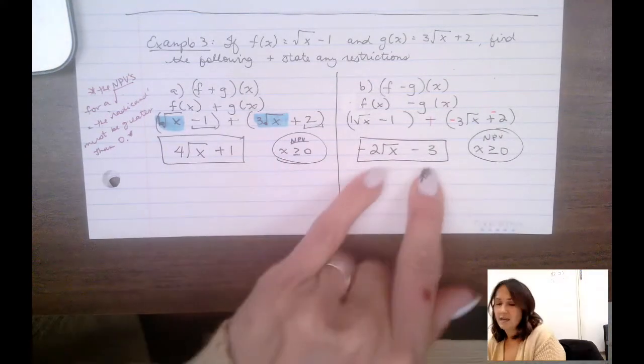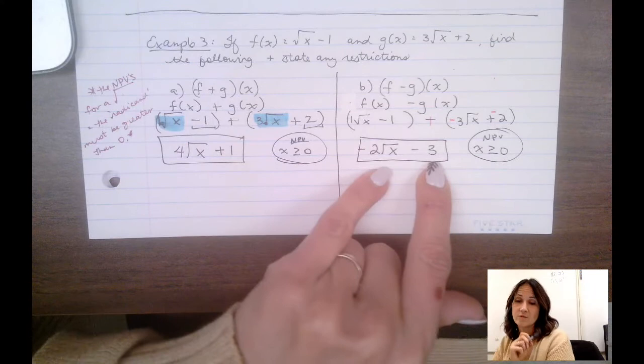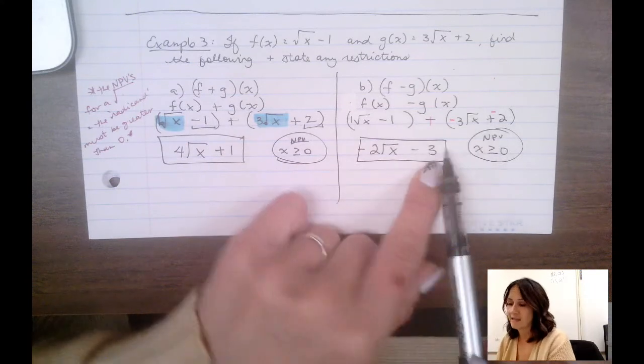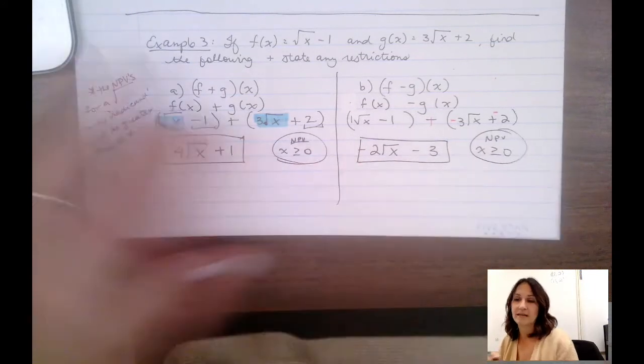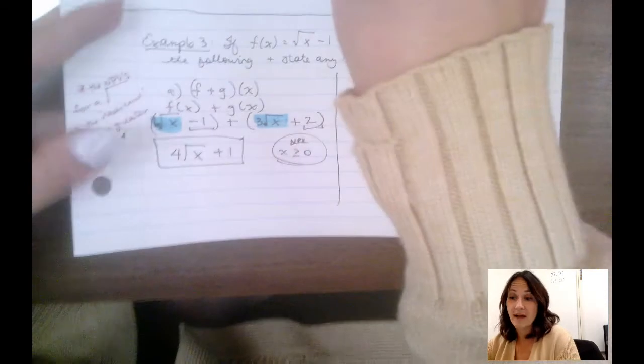Now again, x has to be greater than or equal to zero. Please recognize I cannot put these two pieces together because they are not like terms. This has no radical. This is a radical that is of the square root of x. They have to match. Okay.